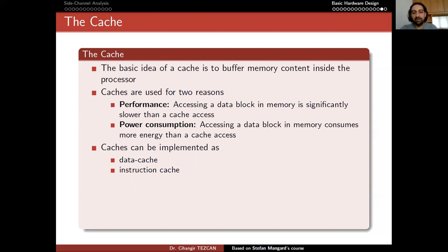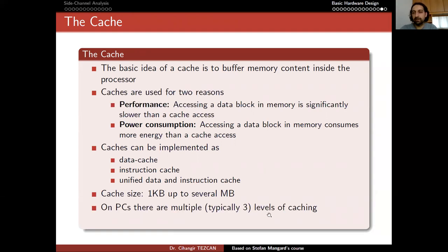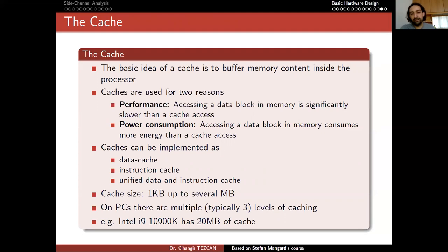Caches can be implemented as data cache, instruction cache, or unified data and instruction cache. Cache size depends on the device — it can be as small as one kilobyte or sometimes even smaller, but current devices have several megabytes of cache. On PCs, there are typically three levels of caching: L1, L2, and L3 cache. On GPUs, there is also L1 and L2 cache — L2 cache is somewhat bigger but slower. For example, a modern CPU like the Intel i9-10900K, which has 10 cores and 20 threads, has 20 megabytes of cache, meaning two megabytes per core or one megabyte per thread.